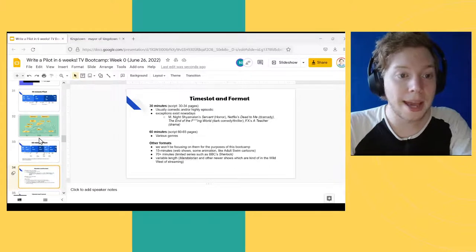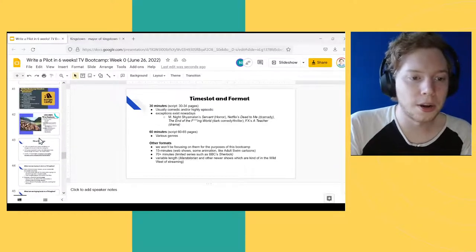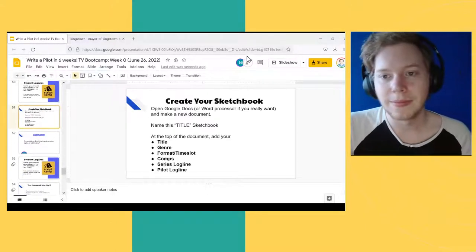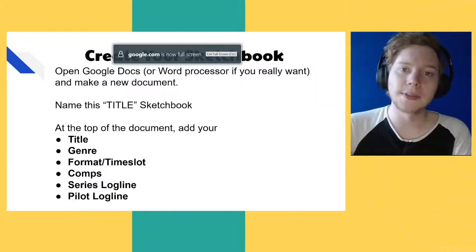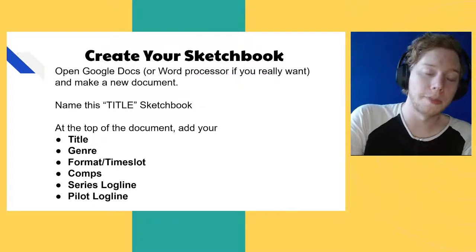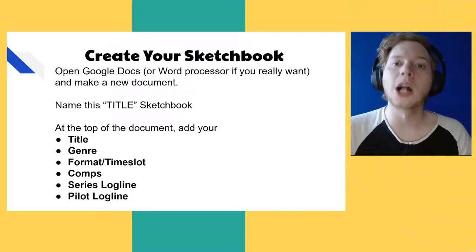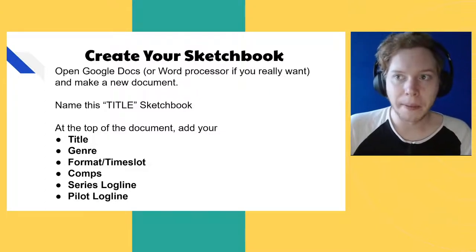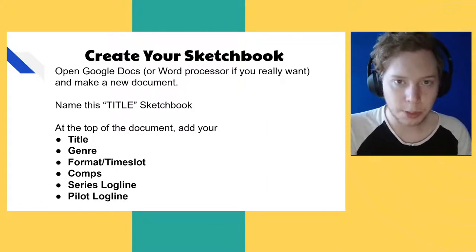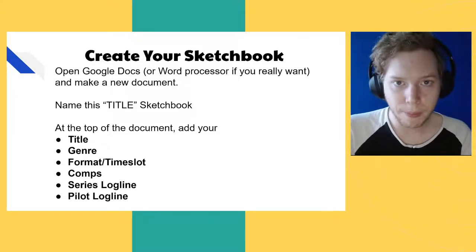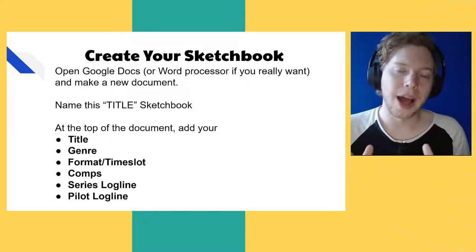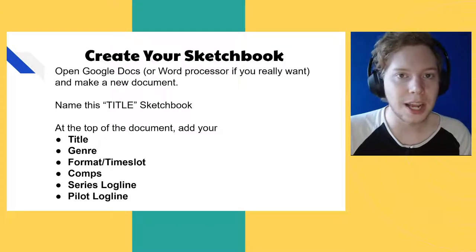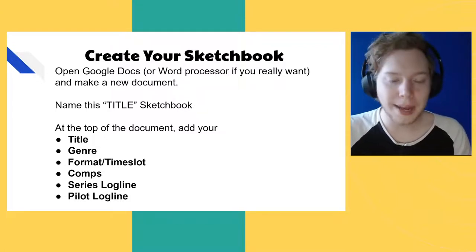Just go to Google Docs and make a new document right now — everybody who is participating or wants to participate in the class. Call it the name of your idea, or if you have a name for your show, put the name of the show and 'sketchbook.' You can just call it 'sketchbook' if you don't know yet. I just want you to have something you're working on while you're listening to the lecture and to be adding stuff, collecting and gathering influences and inspiration as we go. This is a document you're going to be working from as the basis for your outlining as you go forward.